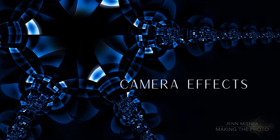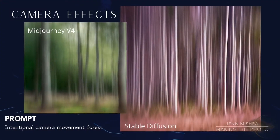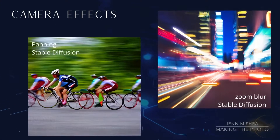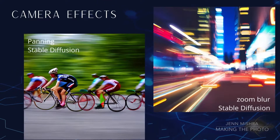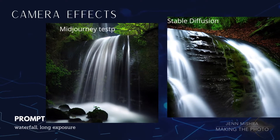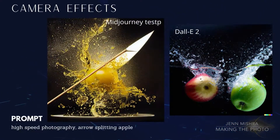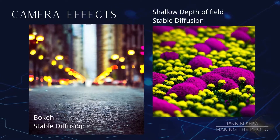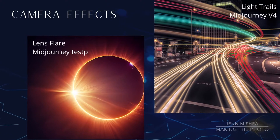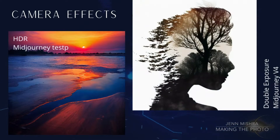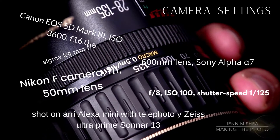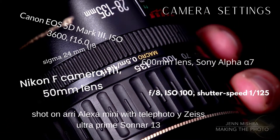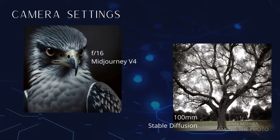Also prompt for specific camera effects and settings. By camera effects, I mean visual effects created by doing something with a camera, like intentional camera movement, panning, or creating a zoom blur. You can ask for a long exposure effect to blur the water in waterfalls, or ask for high-speed photography with a fast shutter. You can ask for sharp focus or bokeh with a shallow depth of field. You can ask for lighting effects like a lens flare or light trails. You can even ask for more advanced techniques like double exposure or HDR photographs. You can definitely prompt for f-stop, focal length, and shutter speed — this emphasizes the photography, but I'm not so sure that I'm seeing the expected visual effects in the image.